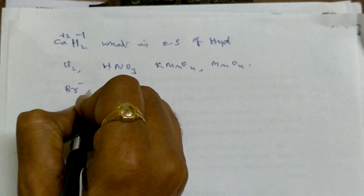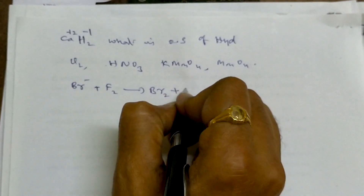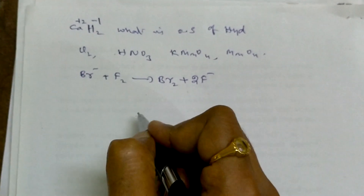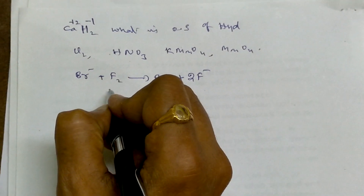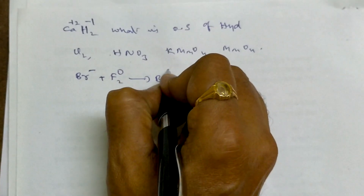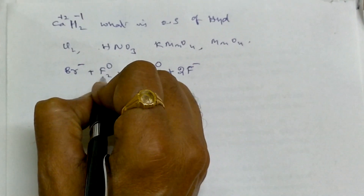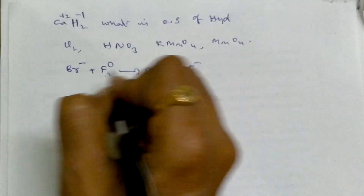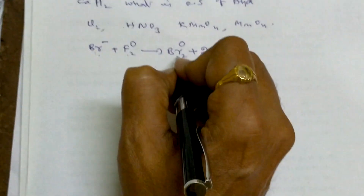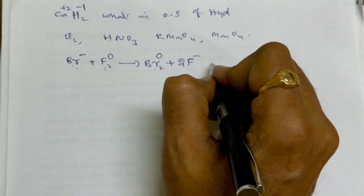In the reaction Br⁻ plus F₂ gives Br plus 2F⁻, which is the oxidizing agent? Br is in minus form, fluorine F₂ is at 0, bromine becomes 0, and fluoride becomes minus 1. Fluorine goes from 0 to minus 1 — it got reduced. Bromine goes from minus 1 to 0 — it got oxidized. So fluorine is the oxidizing agent.